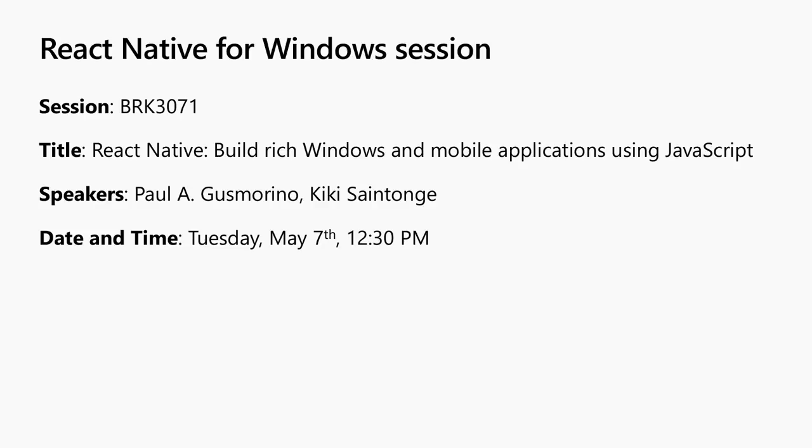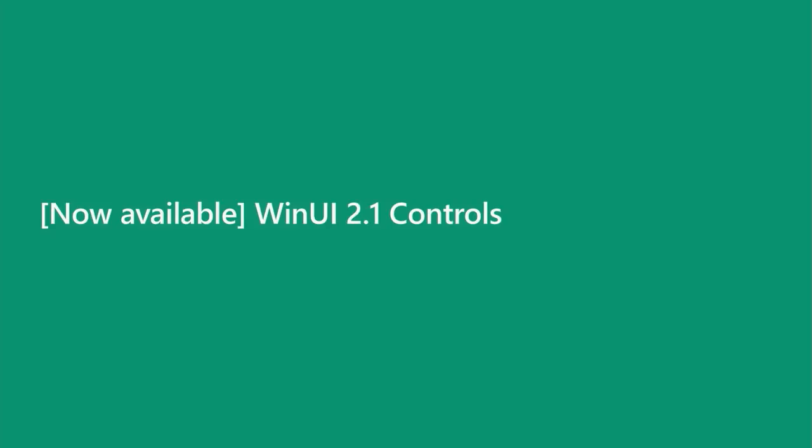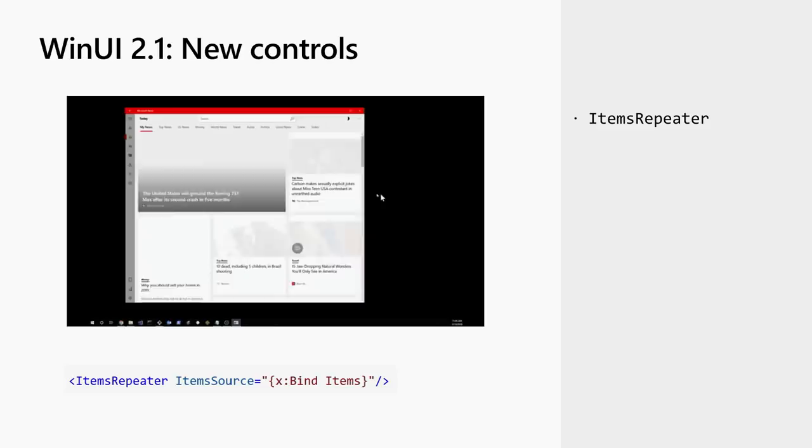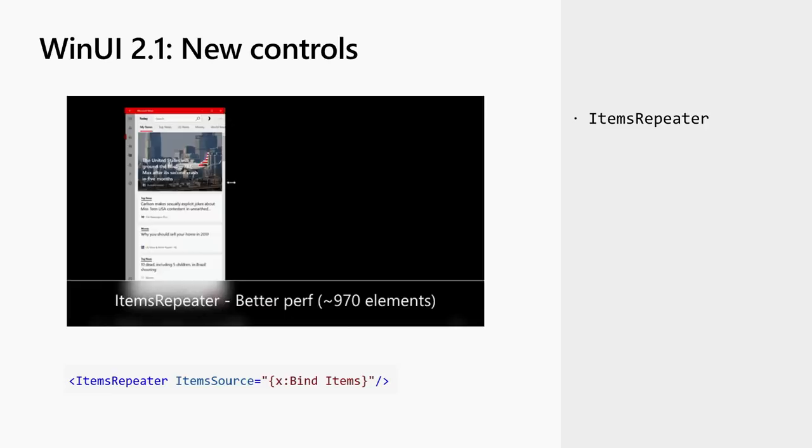Now we're switching gears yet again. We've talked about some of the big rocks — XAML Islands and decoupling the presentation in WinUI 3.0. Now we're going to bubble back up and talk about a bunch of feature work across the platform and WinUI. We're going to run through a bunch of new controls and UI platform features that are being added pretty quickly. First of all, there are a bunch of control updates that shipped with WinUI 2.1 a few weeks ago. One of these additions was the Items Repeater. This allows you to build collection controls that have much more flexible layout options than the existing GridView and ListView.